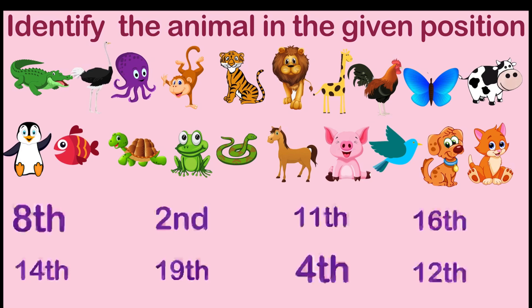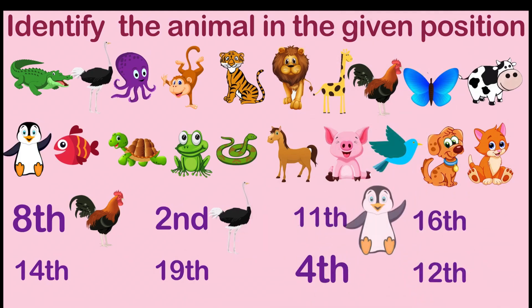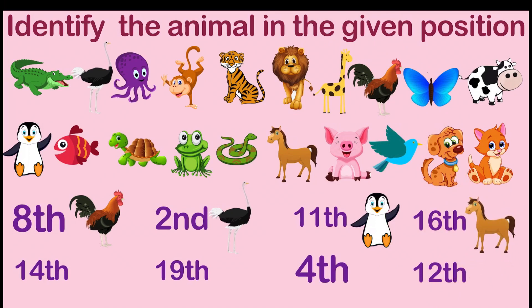Which animal is at the eighth place? Rooster. How about the second place? Ostrich. How about the eleventh place? How about the sixteenth place? Horse. How about the fourteenth place? Frog.